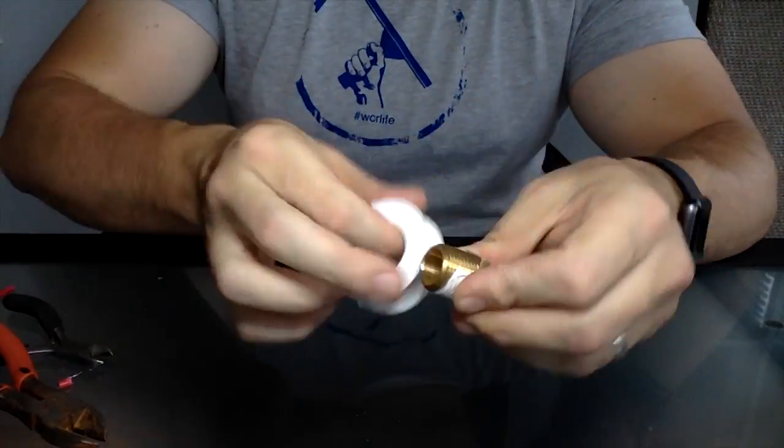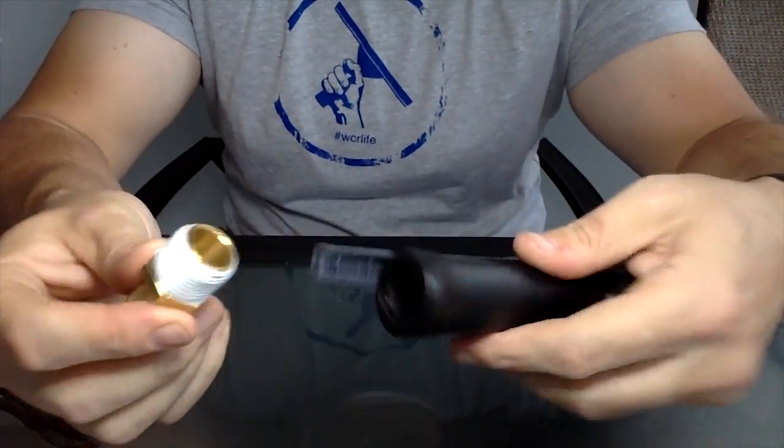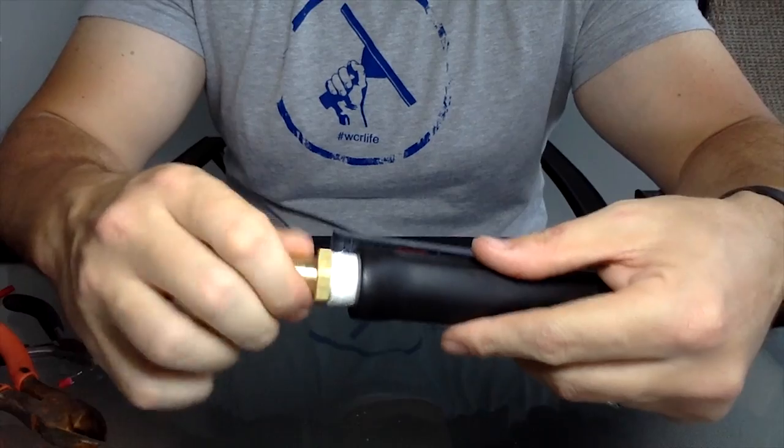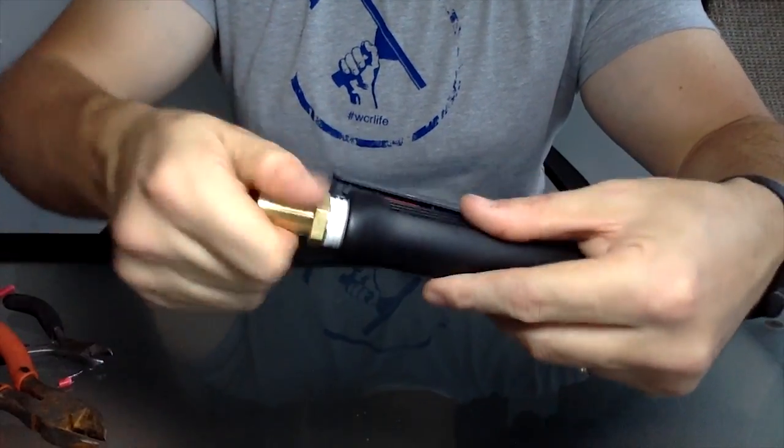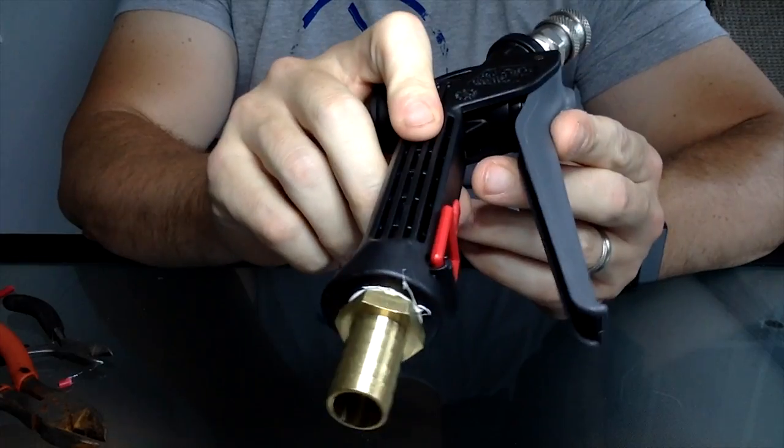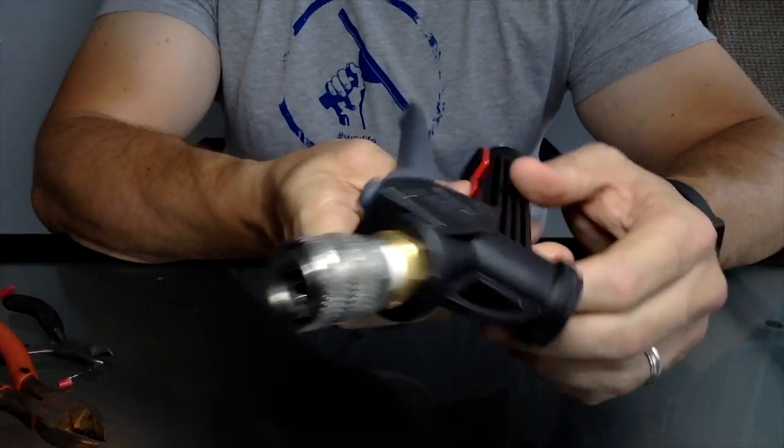Now on the back side of the handle, you'll see again plastic threads. Find another one of those threaded to barbs and gently screw that in. Again, caution on the plastic with metal.